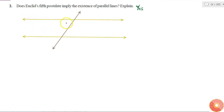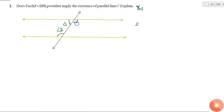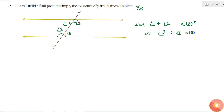It tells that if I have two straight lines and both of them are cut by another straight line, then if the angles on the same side — I'll call them angle 1, angle 2, angle 3, and angle 4 — it tells that if the sum of angle 1 plus angle 2 is less than 180 degrees, or if angle 3 plus angle 4 is less than 180 degrees, then these two lines will intersect on that corresponding side. That is what Euclid's fifth postulate tells.